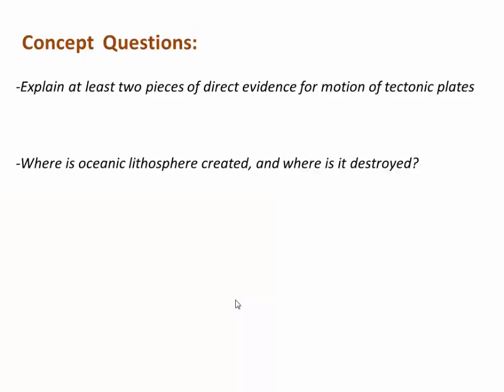So in summary, we've introduced some basic ideas about what tectonic or lithospheric plates are, a little bit about how they move, and what types of boundaries they can have with each other. Hopefully if you review this video, you should be able to answer these two questions: explain at least two pieces of direct evidence for motion of tectonic plates, and also where is oceanic lithosphere created and where is it destroyed? Thanks everybody.